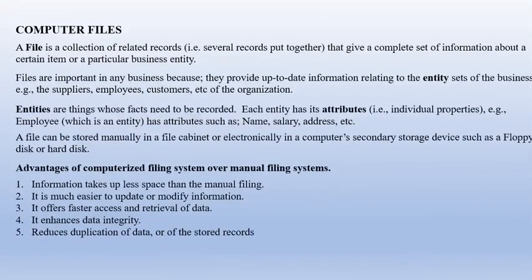Computer files: a file is a collection of related records — several records put together that give a complete set of information about a certain item or particular business entity. Advantages of a computerized filing system over manual filing: information takes up less space, it is much easier to update or modify information, it offers faster access and retrieval of data, it enhances data integrity and security, and it reduces duplication of data — known as data redundancy.